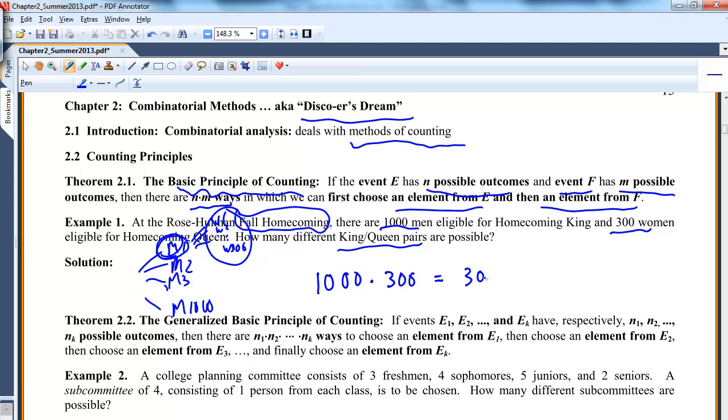So there's 300,000 possibilities for the homecoming king-queen pair.